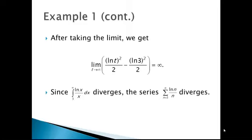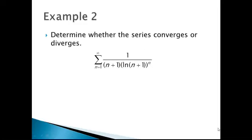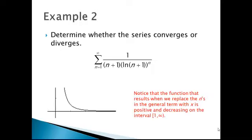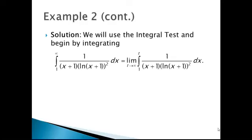Let's look at another example. Determine whether the series converges or diverges: the summation from n equals 1 to infinity of 1 divided by the quantity n plus 1 times the natural log of n plus 1, raised to the second power. Before using the integral test, we need to ensure that the function resulting when we replace the n's with x's is decreasing and positive. The graph suggests that it is, so we begin by computing the integral of 1 over x plus 1 times the natural log of x plus 1 squared.